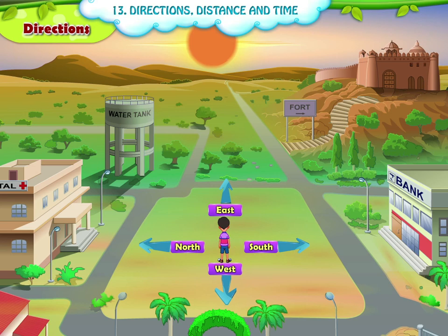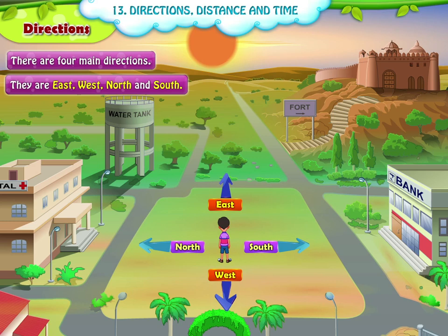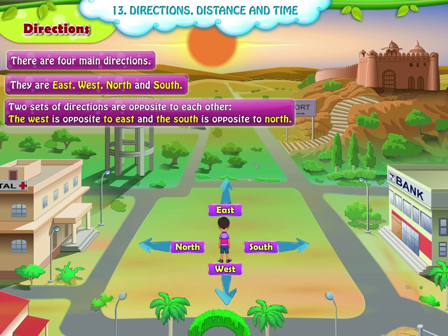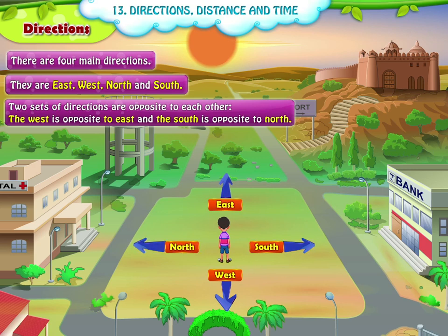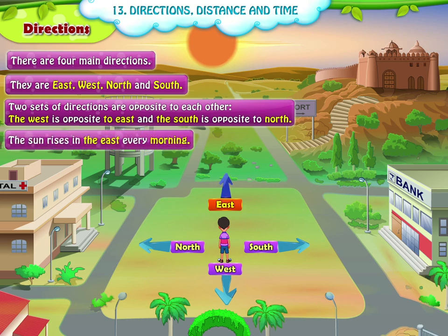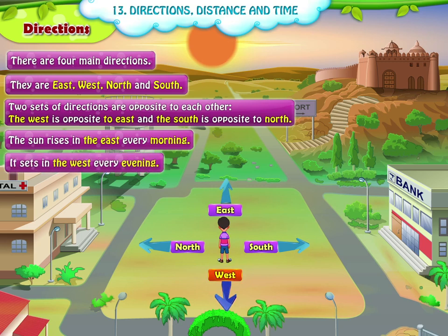So, we must remember: A. There are four main directions. B. They are East, West, North and South. C. Two sets of directions are opposite to each other — the west is opposite to east, and the south is opposite to the north. D. The sun rises in the east every morning. E. It sets in the west every evening.